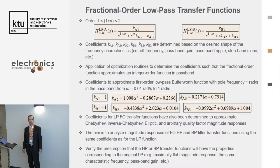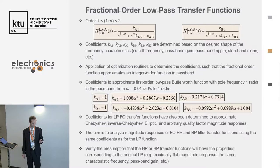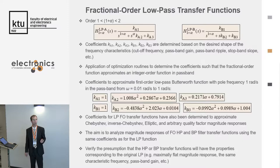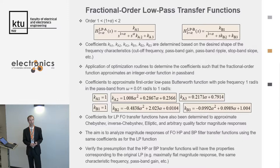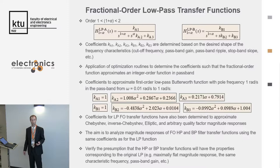Now something about fractional order low-pass transfer functions. I aim at the order between 1 and 2. It consists of the integer order 1 and alpha, which is the fractional component. The fractional order low-pass transfer function can look like this or like this. You can see there the Laplacian coefficient S and some constant coefficients K. These coefficients are determined based on the desired frequency characteristic — for example, you can design them depending on cutoff frequency, passband gain, passband ripple, and various approximations such as Butterworth, Chebyshev, and so on.